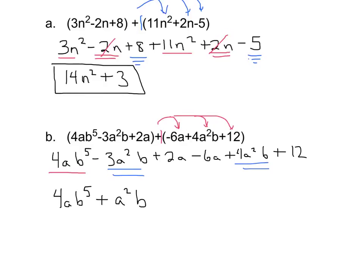And then I have a positive 2a and a negative 6a. Positive 2 minus 6 is a negative 4a.